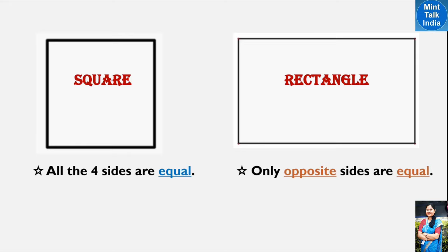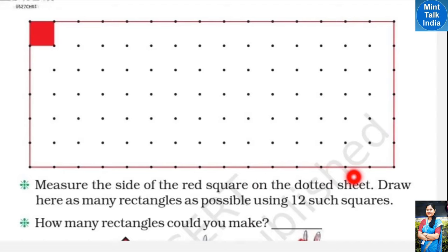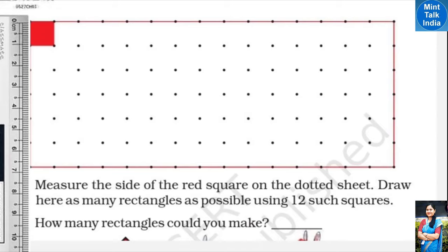Now we can start our chapter. On the first page there is a dotted sheet, a red square, and some questions. The question says: measure the side of the red square on the dotted sheet. We measure it by scale and find that one side is one centimeter. So the rest of the three sides will also be one centimeter each.